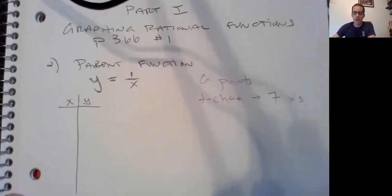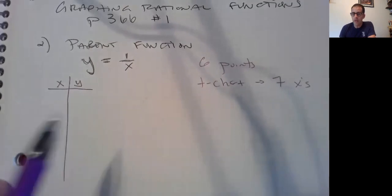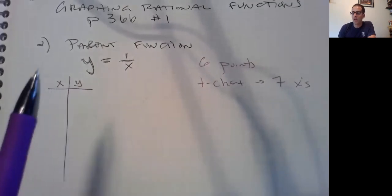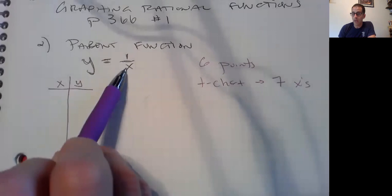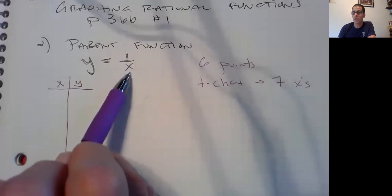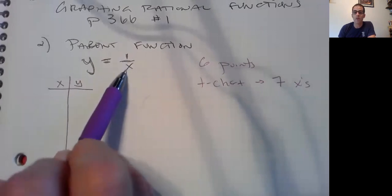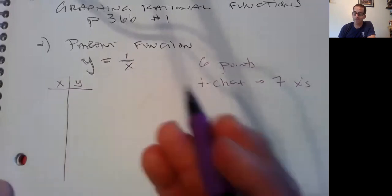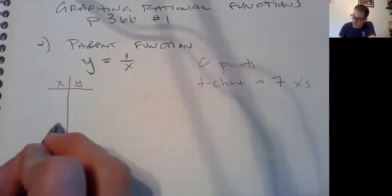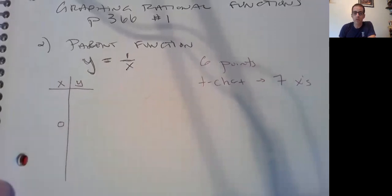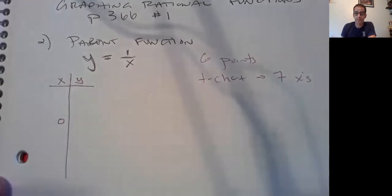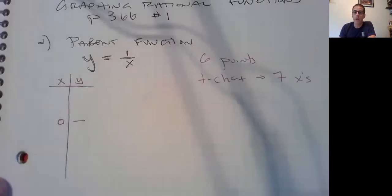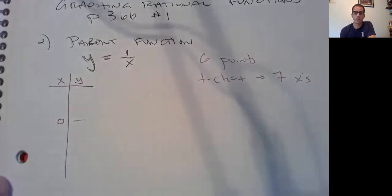Okay kids, think. What is the one number that if we plug into x right here in this function there will not be a y value? What is the one number you can't have in the bottom of a denominator? It's zero. So in the middle, when x is zero, there's no y. Now we know our starting point.